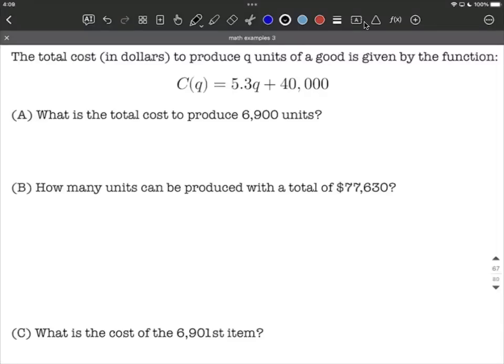Let's take a look at a real-world example where we're given a cost function, C of Q, where Q is the number of units of the good that's being produced. When we get started on these, it's important to note exactly what the variables mean. In this case, Q is our quantity or number of units, where C of Q is going to be the cost.